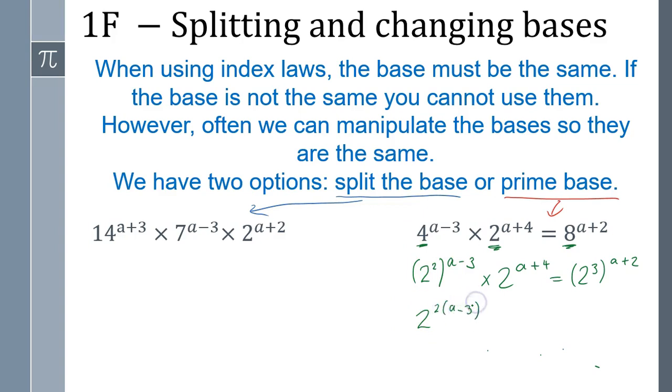It's two a minus three, which is two times two, a minus six. That one's fine where it is, and this one here we'd multiply three by a plus two.